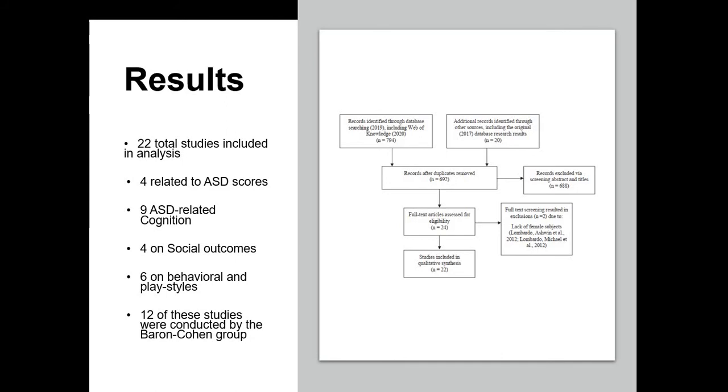The results were that we found 22 studies in total after excluding about 700 studies. After I reviewed the texts, we excluded studies because they didn't have male subjects or female subjects. One was a brain study looking at gray matter and testosterone, but it only had male subjects. We found four related to autism scores, nine related to autism-related cognition, four related to social outcomes, six on behavioral and play styles.